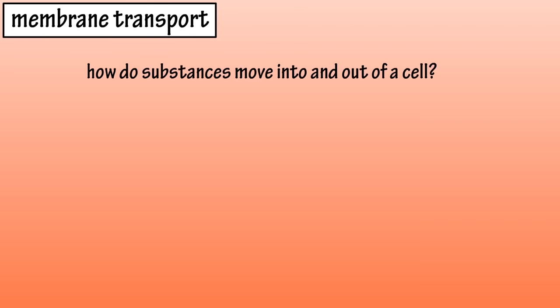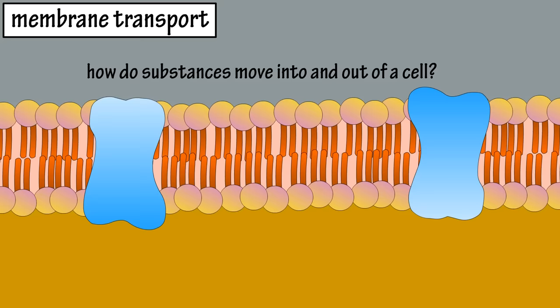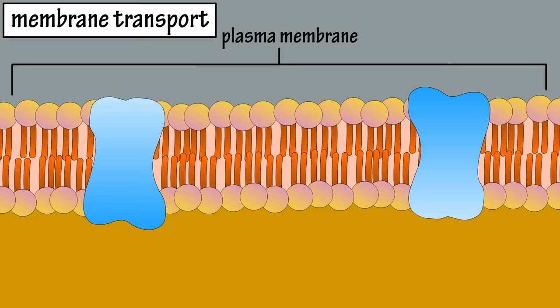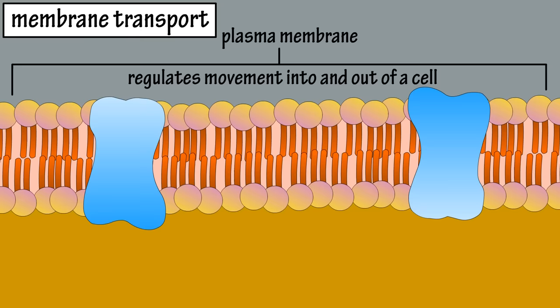Membrane transport. So how do substances move into and out of a cell? Cells have a plasma membrane that acts like a fence, and this plasma membrane is what regulates what moves into and out of a cell.